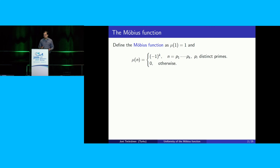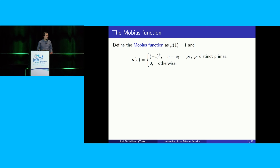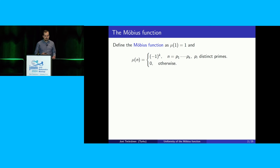Let's start by defining the Möbius function. This is a function on the natural numbers taking values plus one, minus one, and zero, given by mu of 1 equals 1, and mu of n is minus one to the k when n has k different prime factors, and mu of n is zero otherwise. So for example, mu of 30 is minus one, because 30 is 2 times 3 times 5.